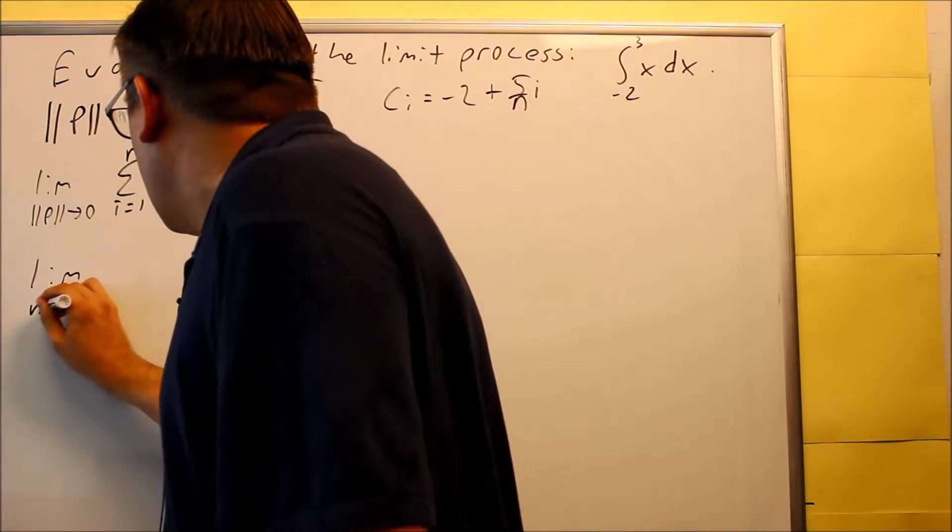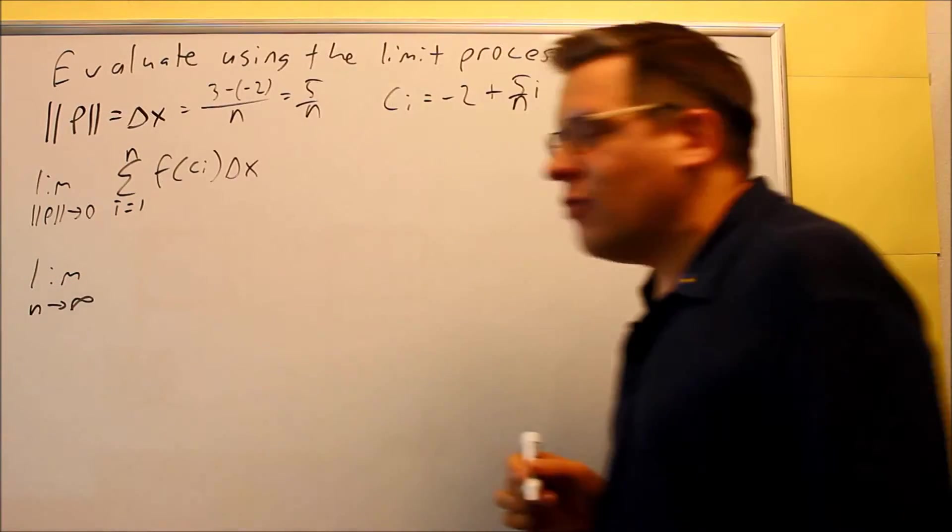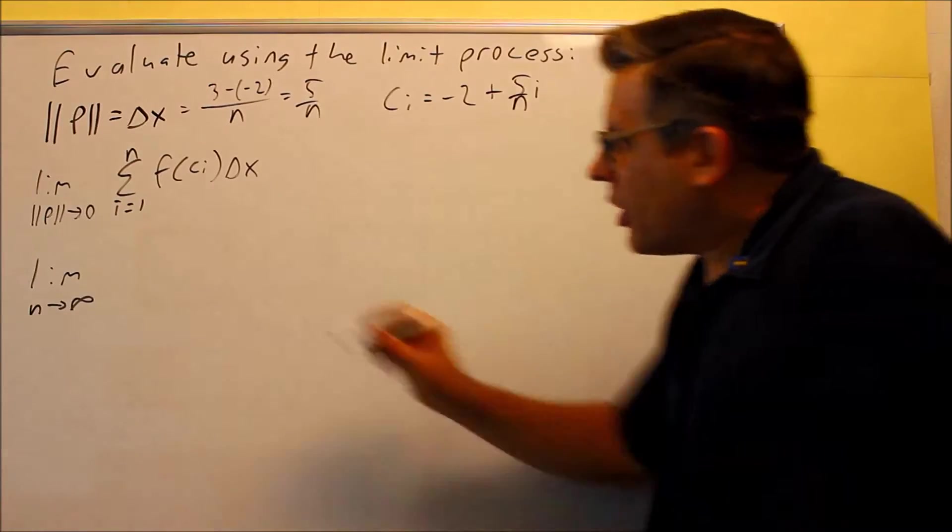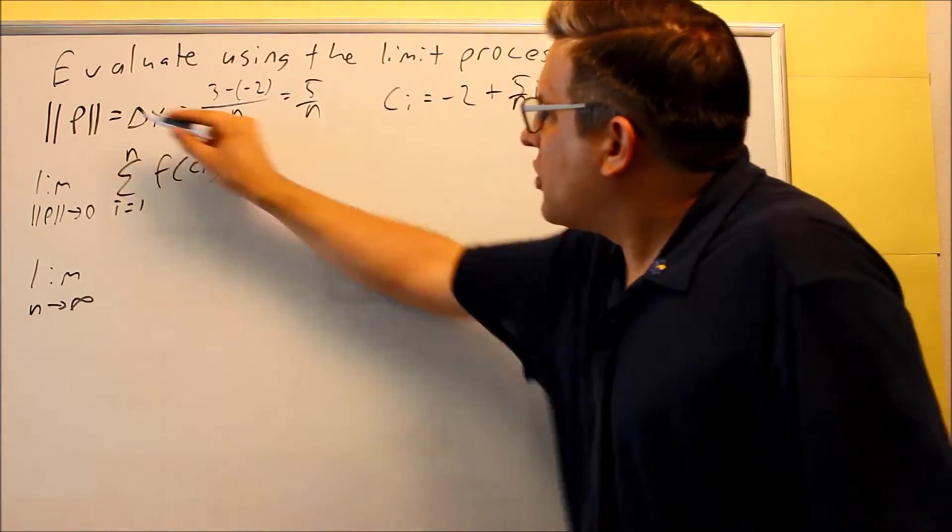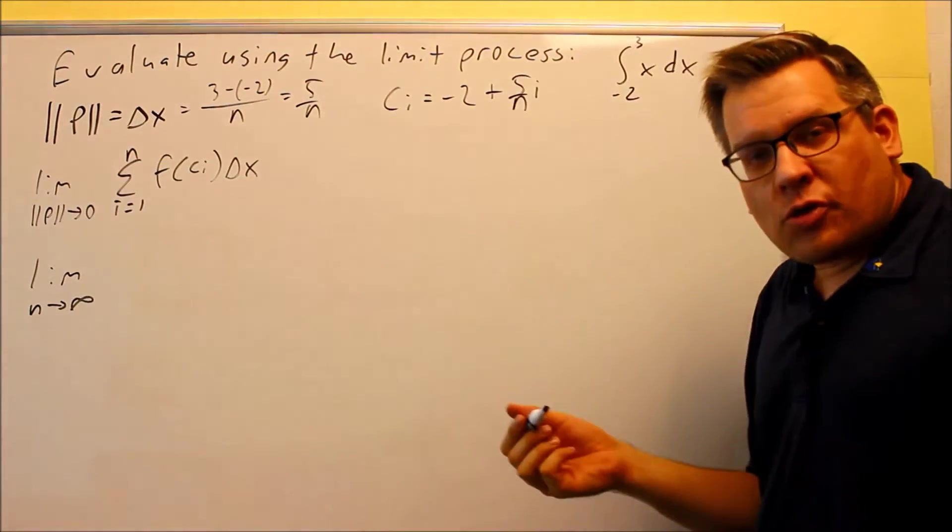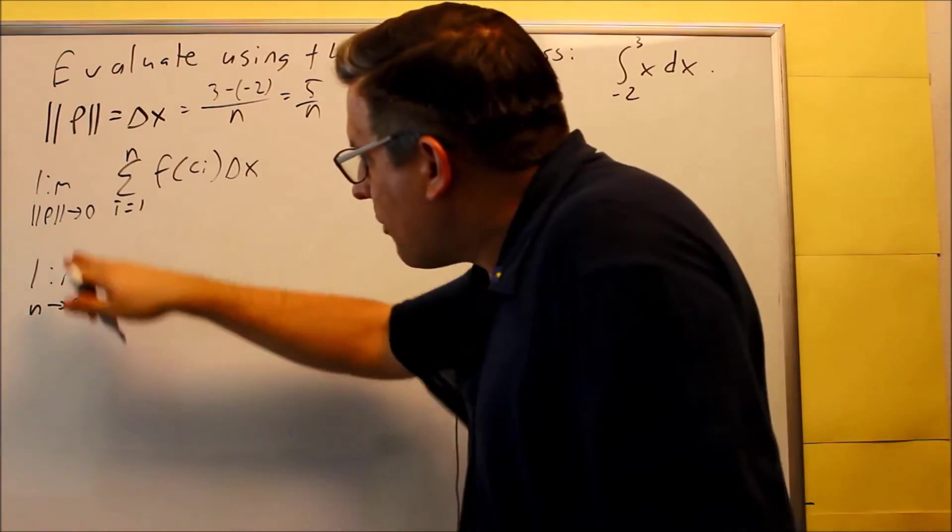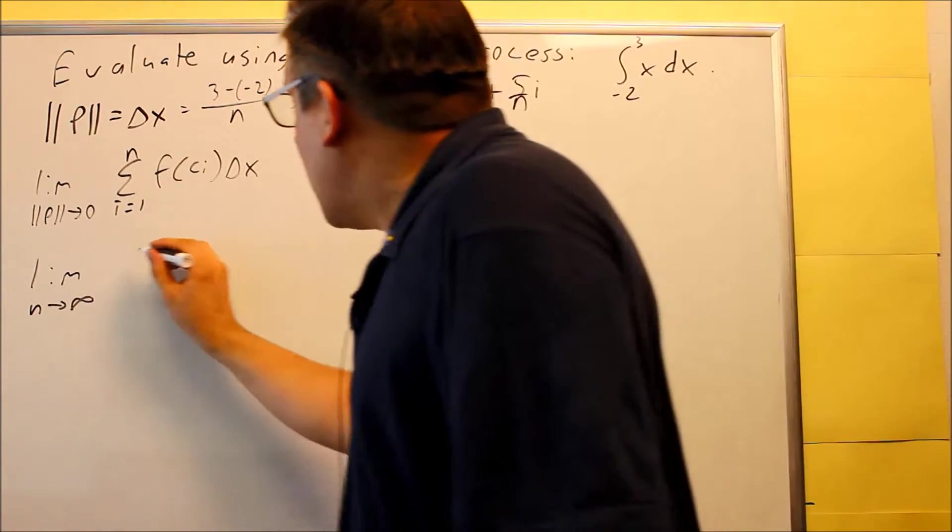When I come down to the next step here, I'm automatically going to put n going to infinity there to start out with. But we've got to start with norm going to 0, because we set that up, and that's how the problems are going to be done in this section, working with that particular notation.